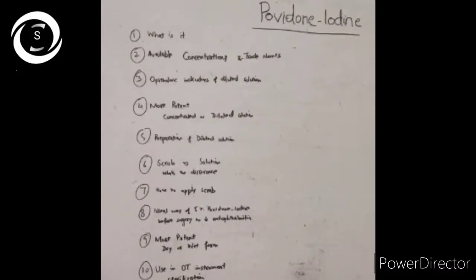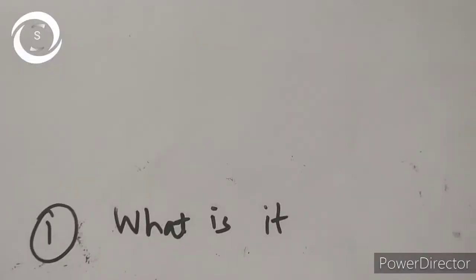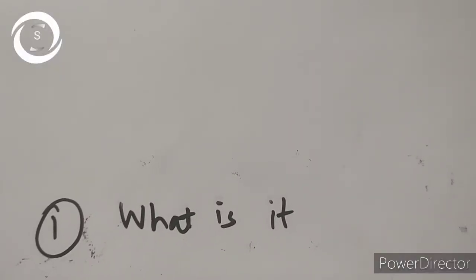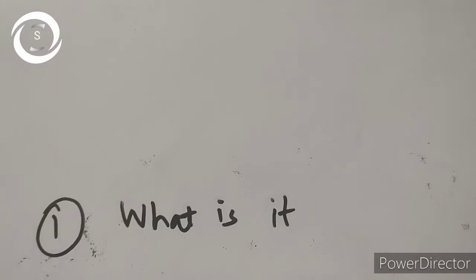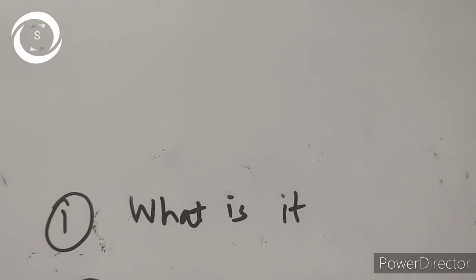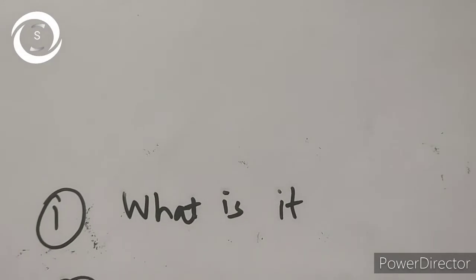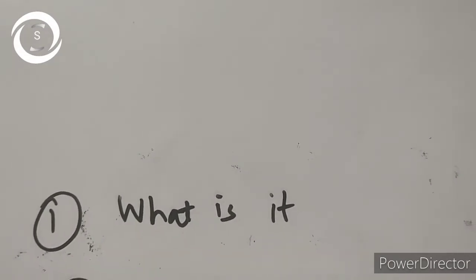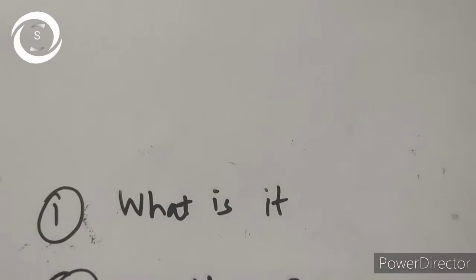We will also cover: what's the difference between scrub and solution and how to apply a scrub, what's the ideal way of 5% povidone iodine instillation into the eye to decrease chances of endophthalmitis, which form is more potent — dry or wet — and what's its use in OT instrument sterilization.